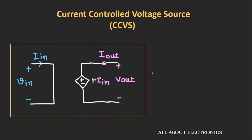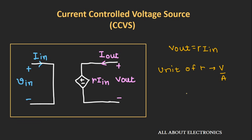The first one is the current-controlled voltage source, represented by this diagram. Here the current is controlling the voltage of the voltage source. The output voltage can be given as R×Iin, where Iin is the input current controlling the voltage and R is the coefficient of this voltage source. The unit of this coefficient R is volts per ampere, or we can say R has a unit of resistance. Sometimes this R is also known as transresistance.